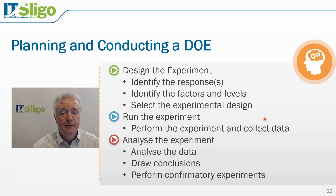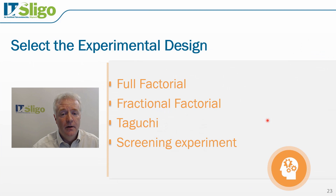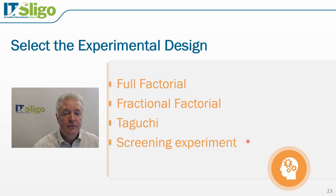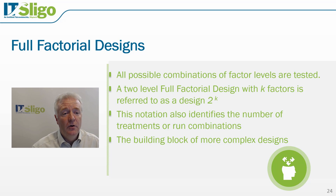We will next select the experimental design. There are a number of experimental designs we can choose. The simplest is the full factorial, where we run all combinations of factor levels. In the fractional factorial, we run only a specific subset of all possible combinations. In Taguchi experiments, we use orthogonal arrays and signal-to-noise ratios. In a screening experiment, we evaluate a large number of factors in a small number of experiments, largely to identify which factors need further experimentation and which can be ignored in the optimisation of our process.